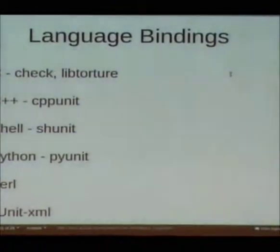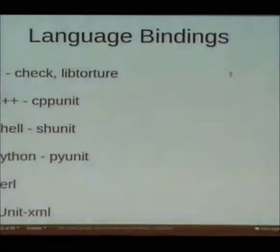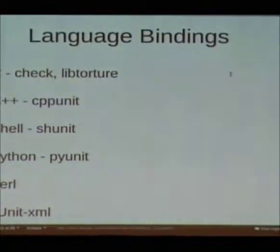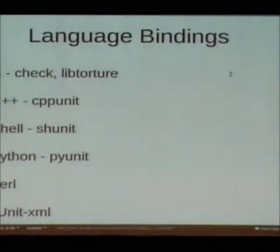JUnit XML isn't really a language binding here, but it's a filter — subunit-to-JUnit-XML — that takes subunit in and outputs a reasonably standard JUnit XML test file. That's really useful for integration.